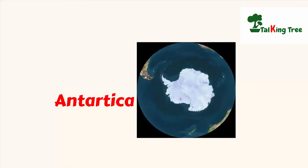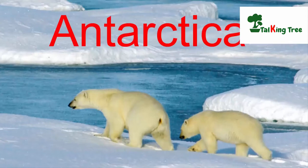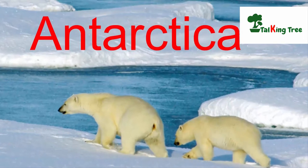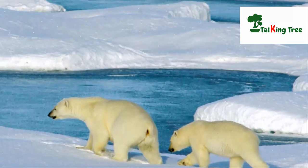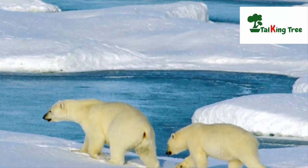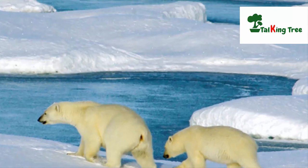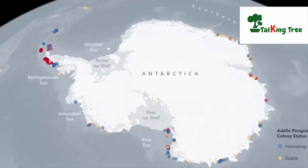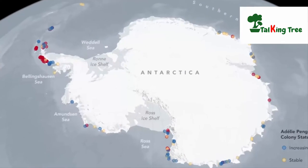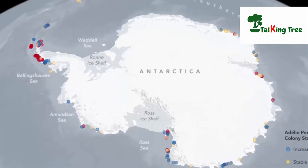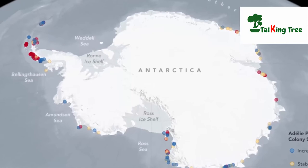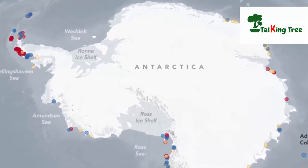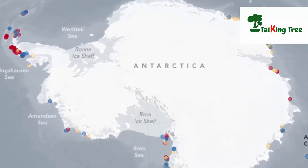Antarctica. Arctic means North — the northernmost point of Earth. But as Antarctica is situated at exactly the opposite of the Arctic, it is named anti-arctic, or Antarctica.